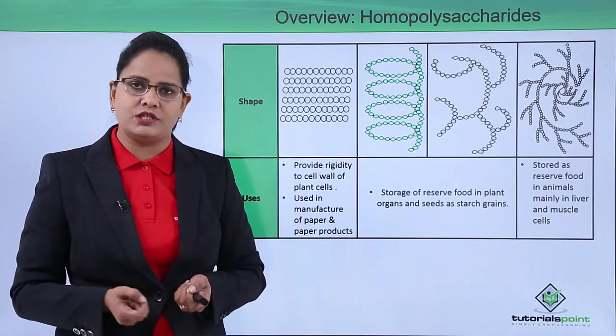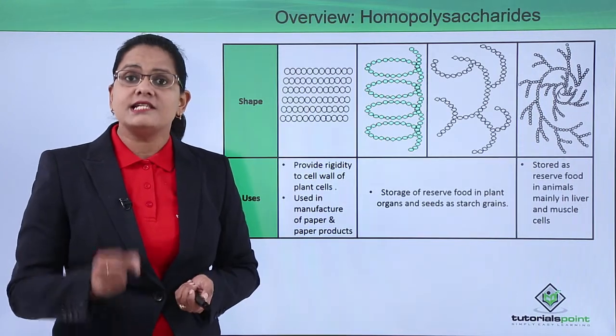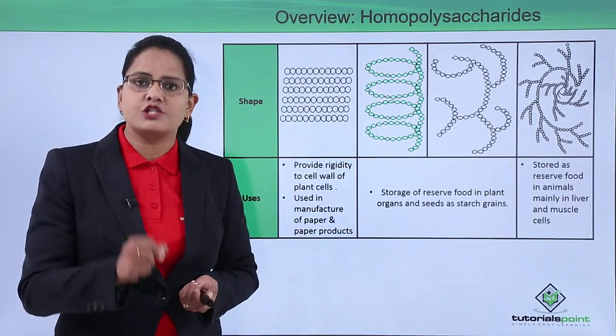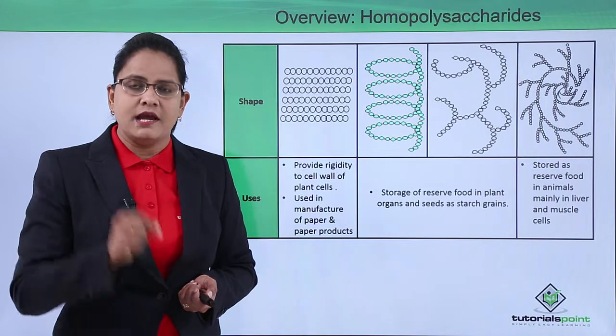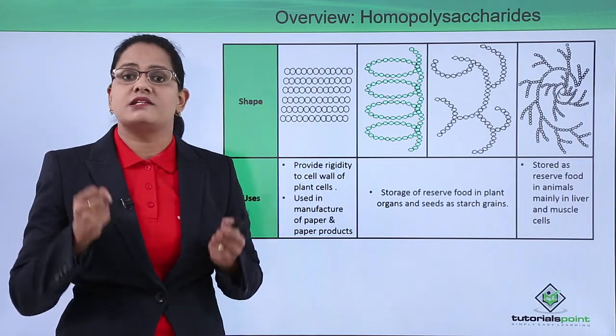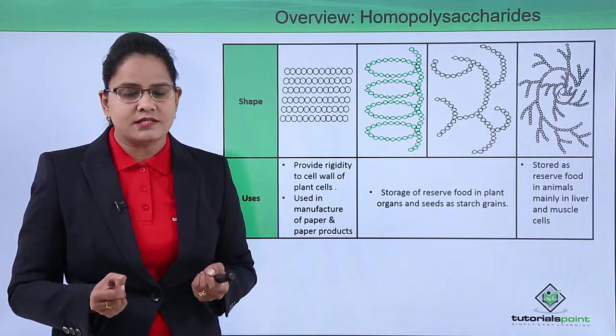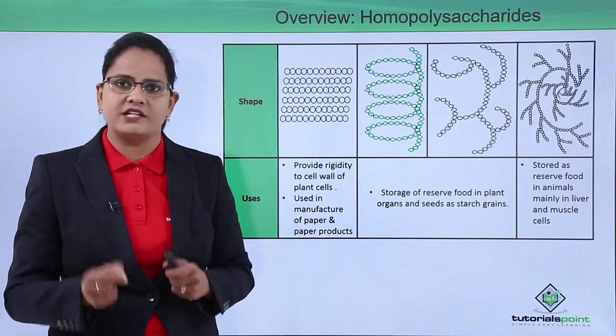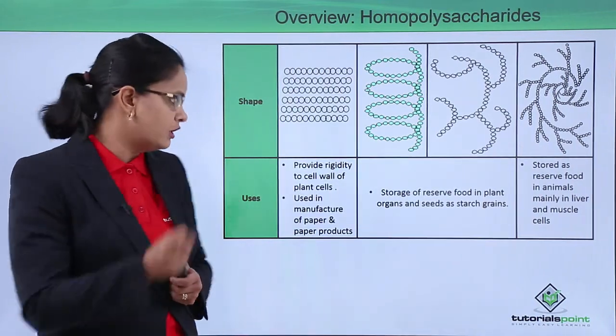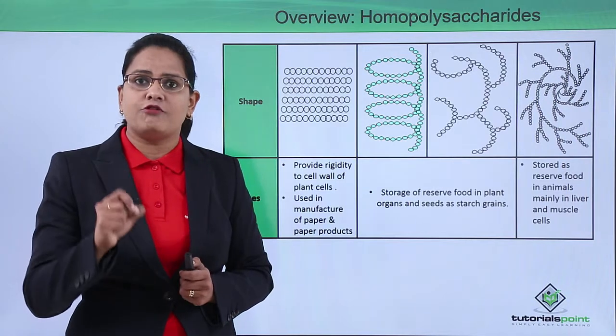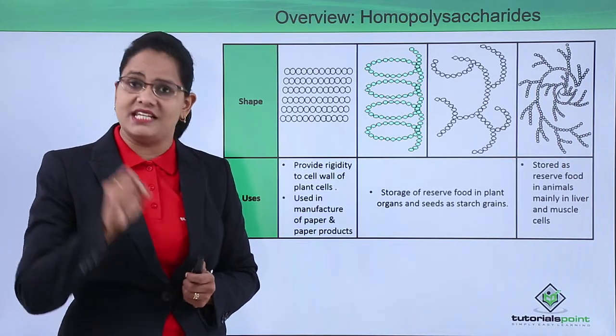Finally, the uses: the use of cellulose is it provides rigidity to the cell wall and it is commercially used in production of paper and paper products. Starch, we all know, is a reserve food formed during photosynthesis in the form of glucose and converted into starch. So it is a reserve food, also it is formed in the form of starch grains which can be eccentric as well as concentric.